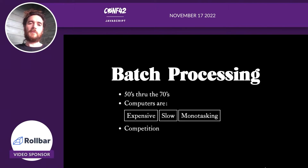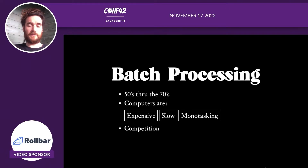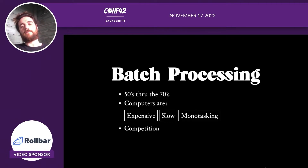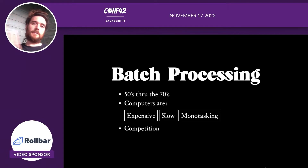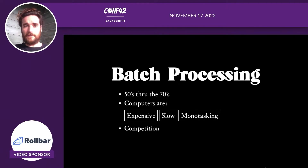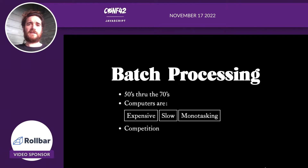The way they achieved this was through batch processing, where you would create a batch job out of several different programs instead of running them separately. You might get ten programs and stitch them together — first program, second program, third program, fourth program — and feed that batch job into the computer. The computer would churn through each job, spit out the output, and move on to the next one. When all of the batch job was finished, a human operator would come in and put in the next batch. This cut down on operator handling time and was very efficient. The people who paid for the computers loved batch processing because they felt like they were getting their best bang for their buck.